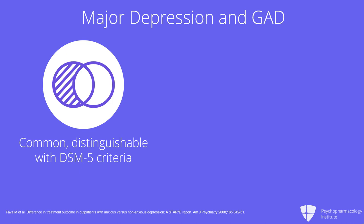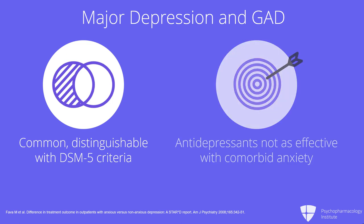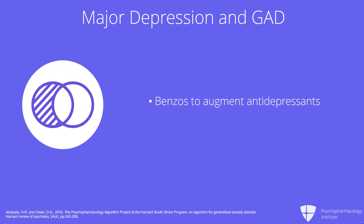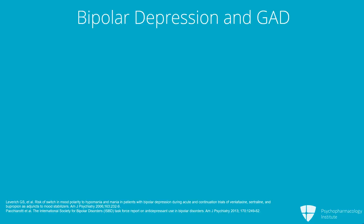The evidence actually seems to show that when you have major depression with comorbid anxiety, antidepressants work much less well than when there's no comorbid anxiety. We don't have great studies showing what to use for major depression and GAD together, but we would speculate there's a role for benzos as an augmentation of antidepressants, or picking among more sedating anti-anxiety agents such as hydroxyzine and pregabalin for the anxiety part — though you would still need to be using an antidepressant.